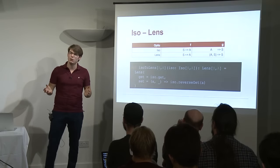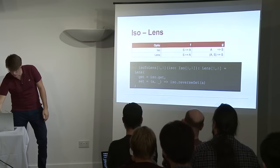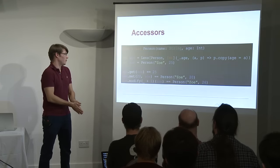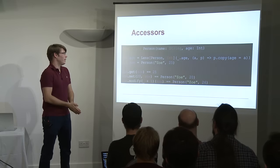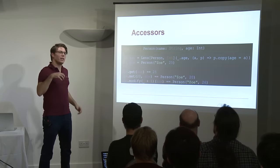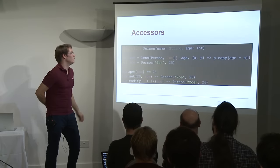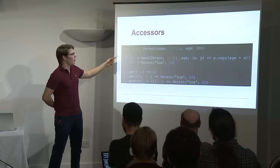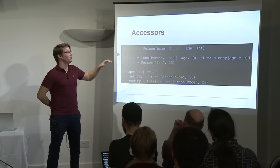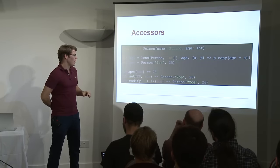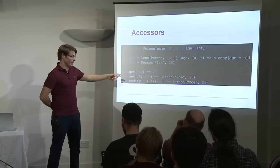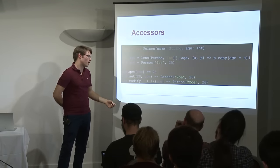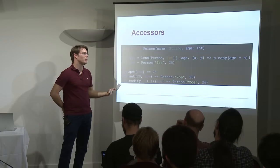How do ISO and lenses relate to each other? They both have the same get method, but ISO is able from any A to come back to S, while a lens needs an extra context. Similar to prism, there is a transformation from ISO to lens. A lens is a weaker ISO where basically we say: I don't care about the extra S. An ISO is a lens where there is no extra context — kind of a case class with a single element.